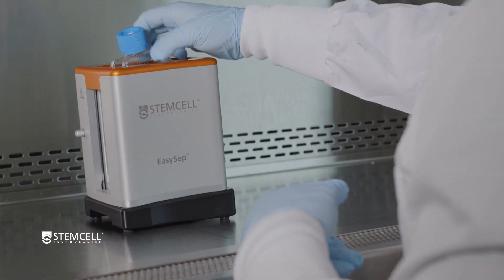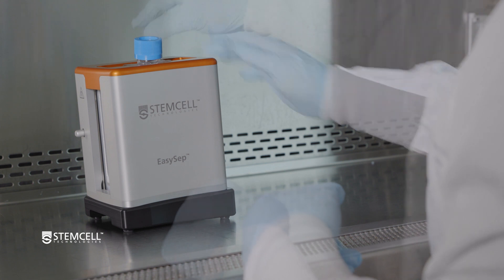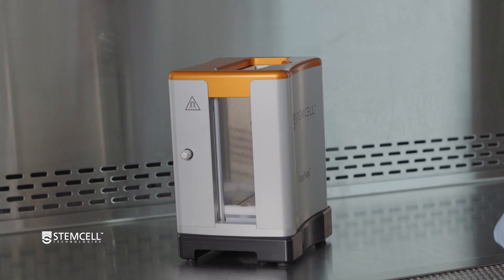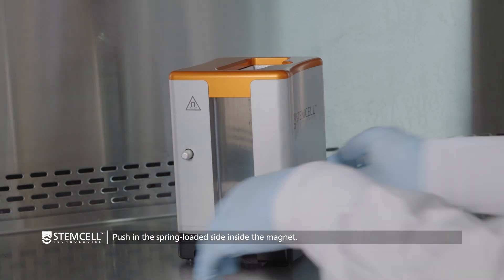Follow these steps to insert and release the T75 flask in the EZ250 EZ-Set Magnet. First, place the magnet on your working surface and push in the spring-loaded side inside the magnet.